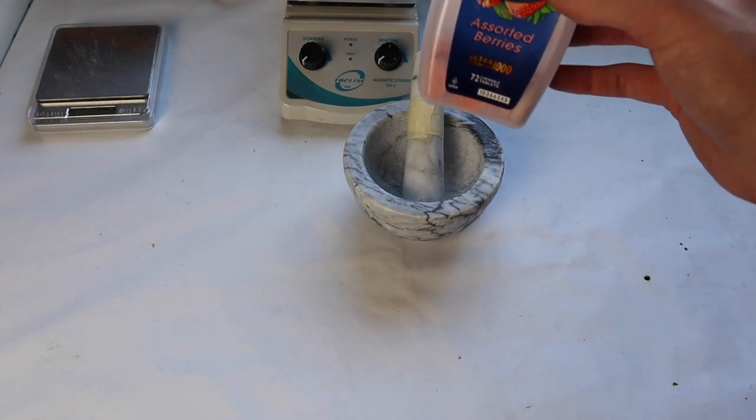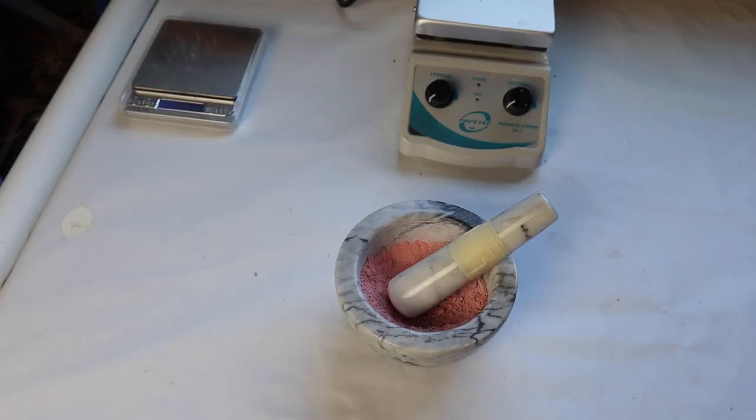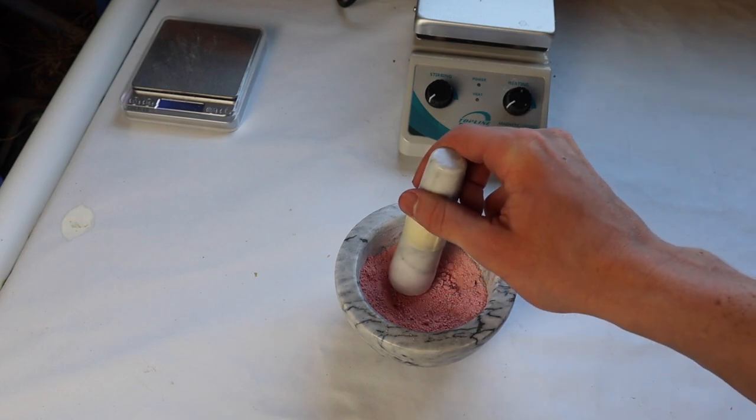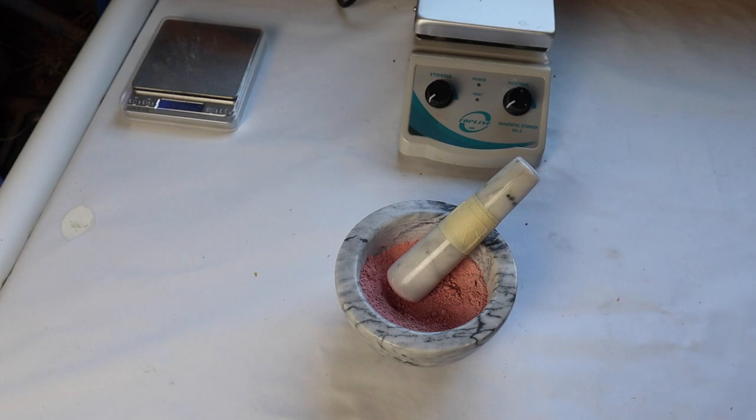The first step is just going to be to crush up the Tums in a mortar and pestle. Each one of the Tum tablets weighs about 2.6 grams and has about 1 gram of calcium carbonate. So what I need to do is get rid of the 1.6 grams that is not calcium carbonate.